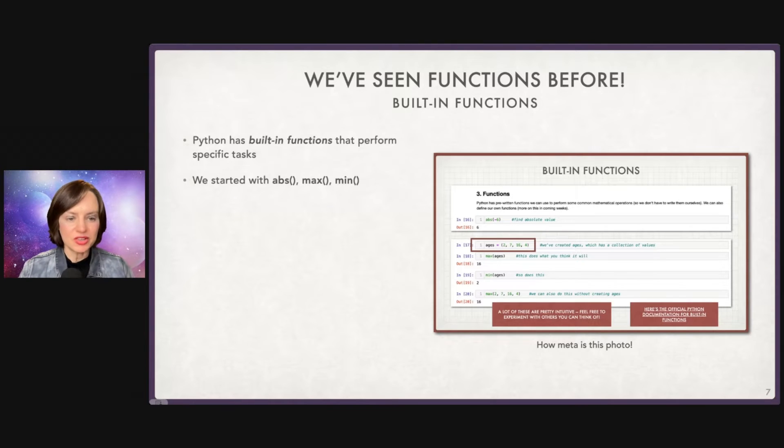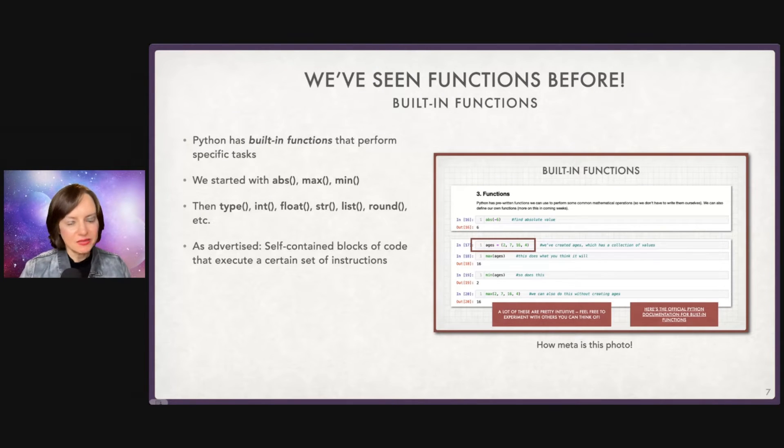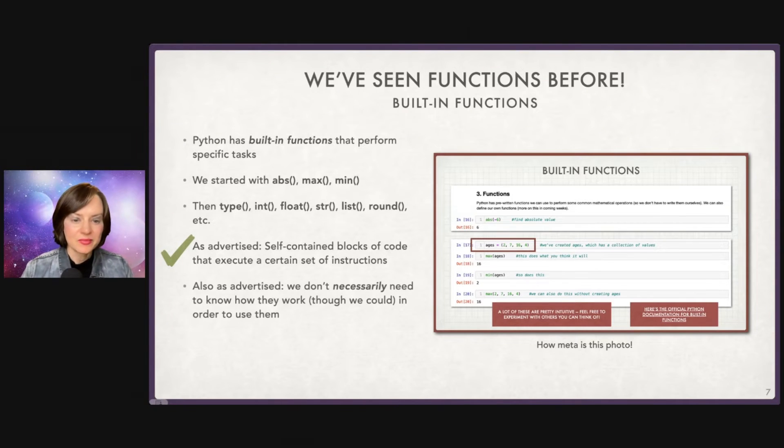So these are our built-in functions. We use things like max, abs, min. We also use type, int, float, string, lots and lots. As advertised, perfectly self-contained, they execute a certain set of instructions, turn something into a list, turn something into a string, inspect the type, find the absolute value, and so on. We also don't necessarily need to know how they work, though we could, and of course, in some cases, we do want to know how they work. For our purposes so far, we're fine, not really worrying about the internal details. This is not one of those cases.